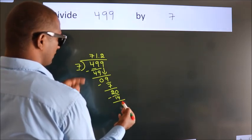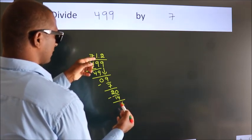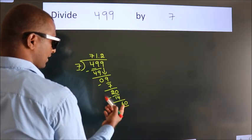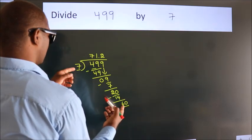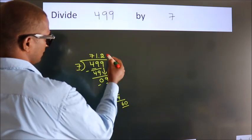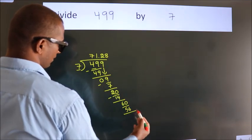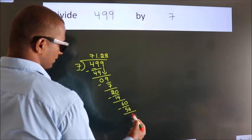After this, we already have the decimal. So directly take 0. So 60. A number close to 60 in 7 table is 7 8s 56. Now we subtract. We get 4.